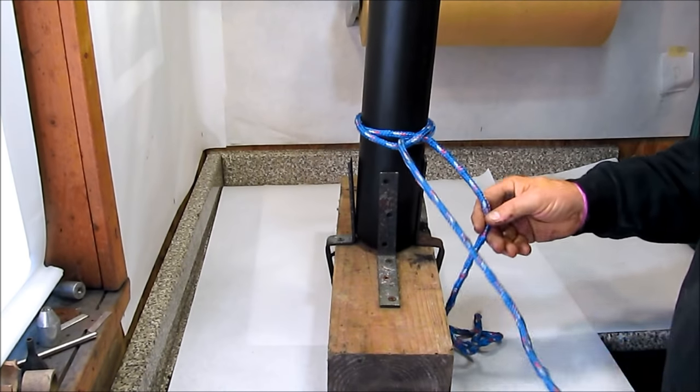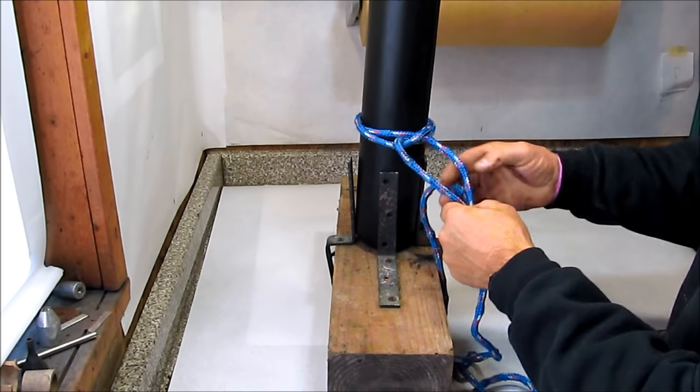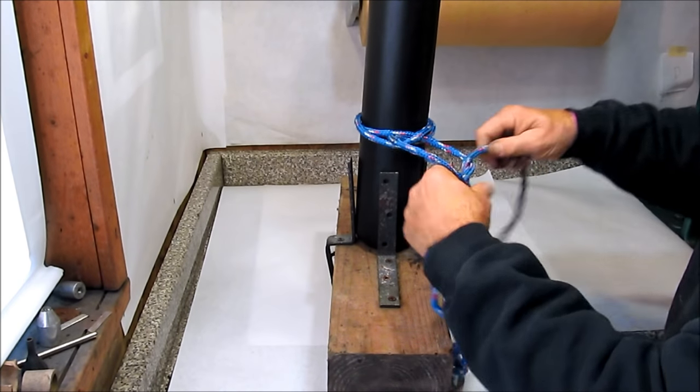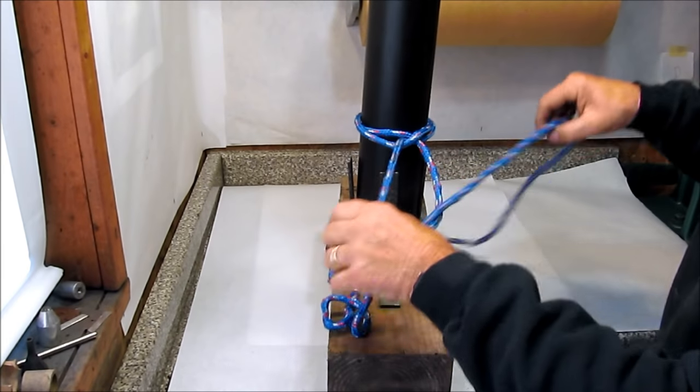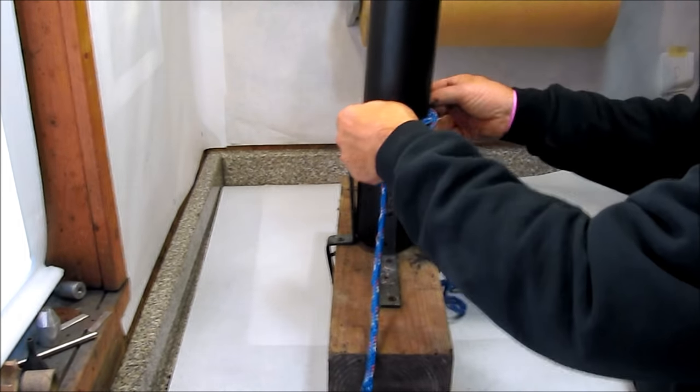And then if I do want to secure that with an overhand knot, I just tie an overhand knot like this and secure it, pull that tight, and with my small string that will secure that knot very, very well.